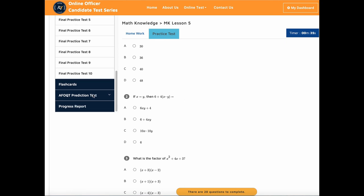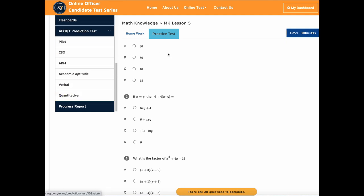Then we'll move into AFOQT prediction test. So this prediction test has different parts, somebody interested for pilot, for CSO, ABM, academic aptitude, verbal, quantitative, right? So you need to take the whole test, right?